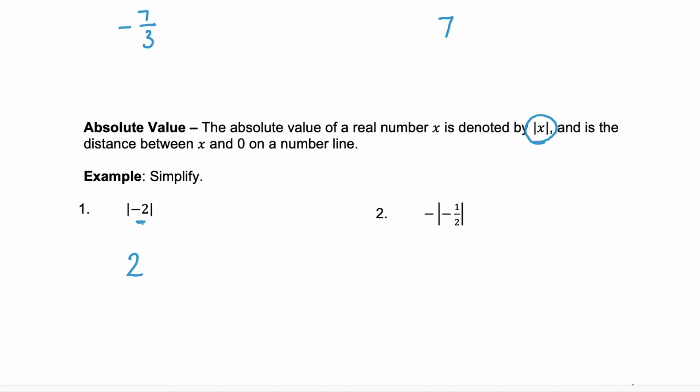If we think about distance, negative 2 on a number line is 2 units from 0. Right? Here's 0 and here's negative 2. We have 1, 2 units. So absolute value is telling us the distance from 0.